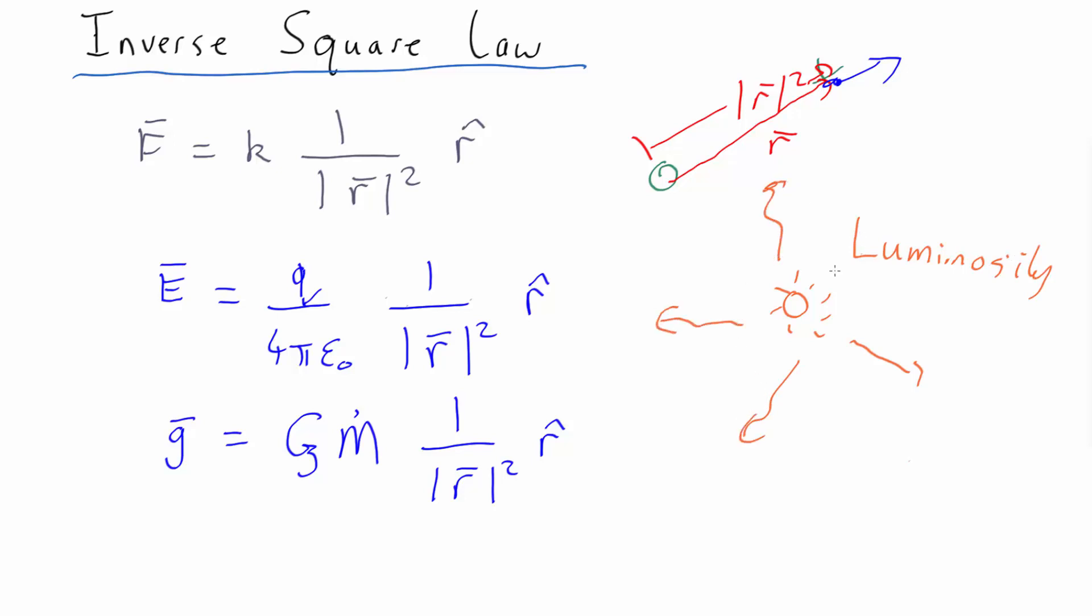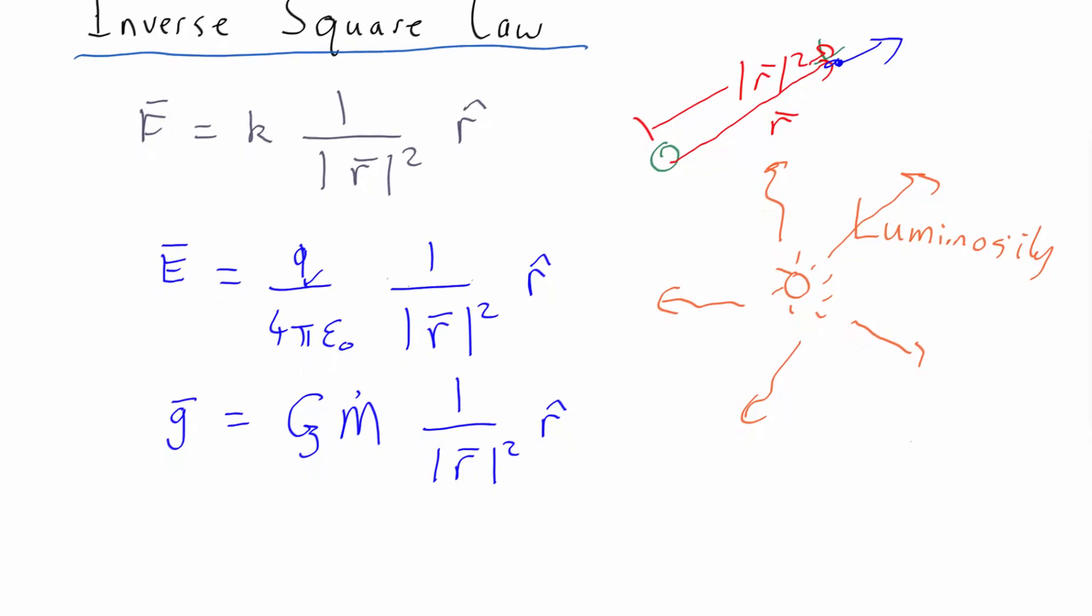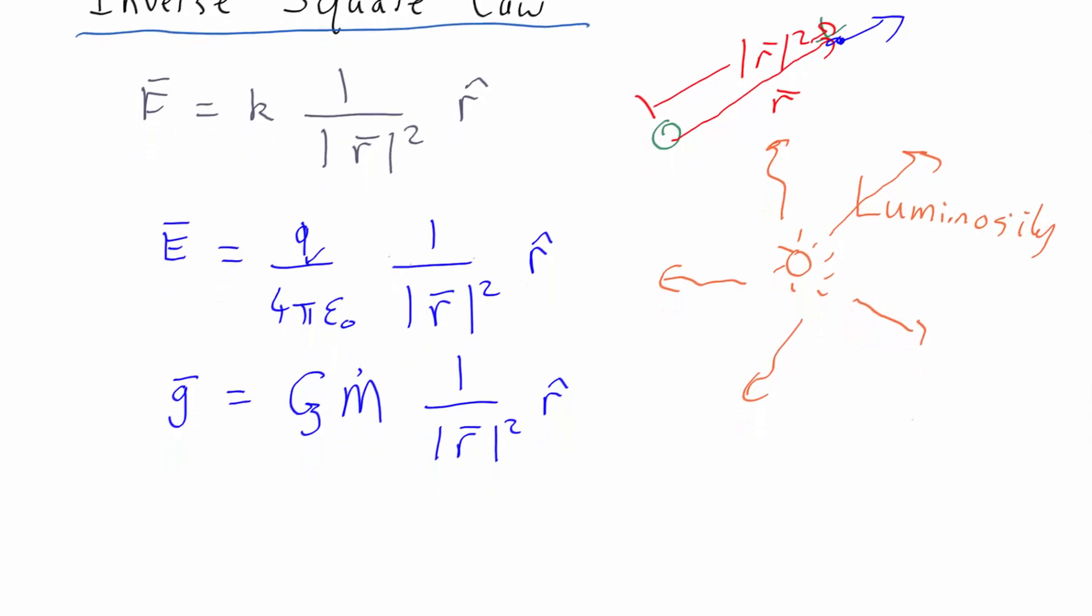The individual photons don't get weaker as they travel, but they get more spread out. So the number of photons hitting you if you're a long way away per second is going to be much less than the number that would hit you if you're very close. That's why far away things look faint.